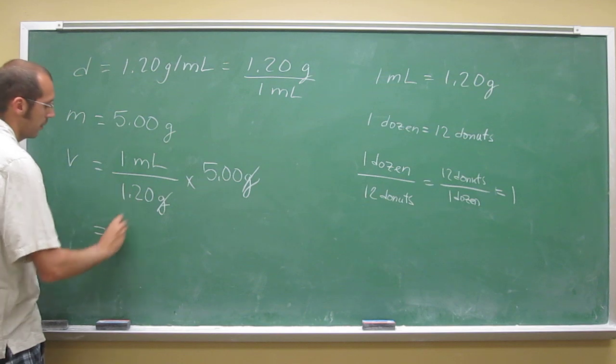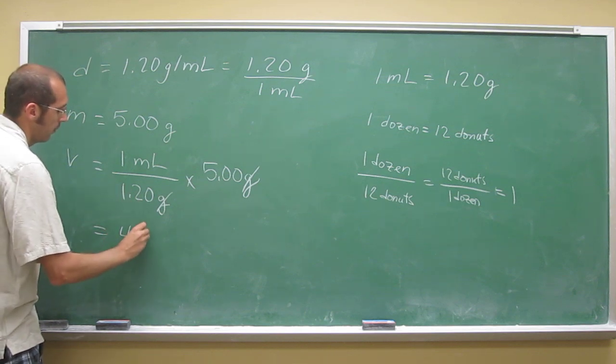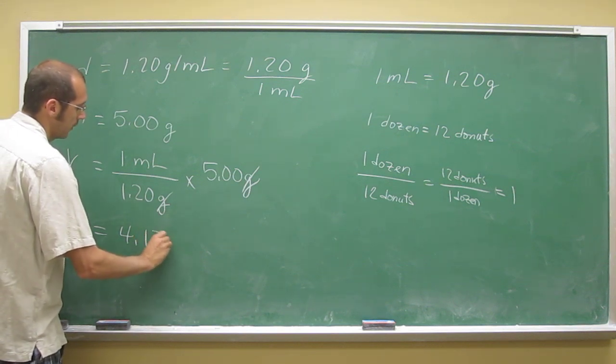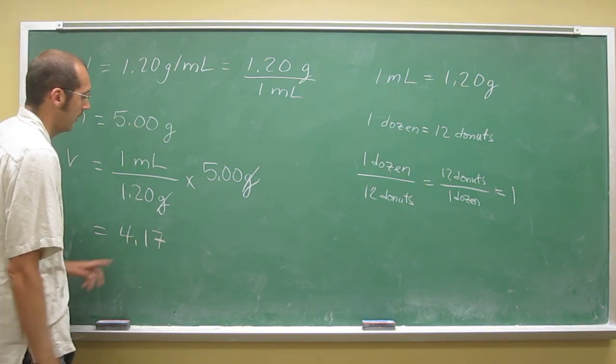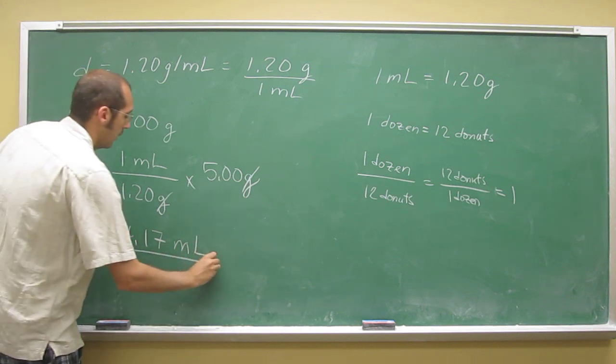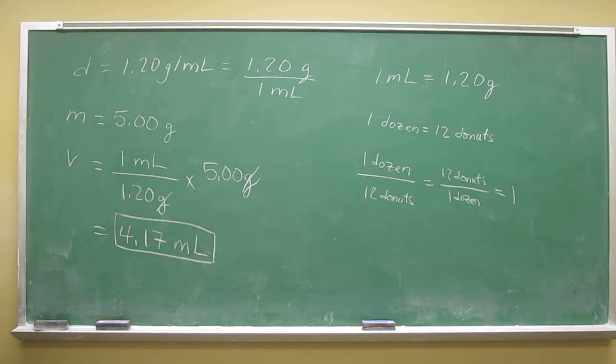So, this is the three sig figs, so 4.166666 is higher than 5, so we're going to say 4.17, and you've got to remember your units, because your number doesn't mean anything without units.